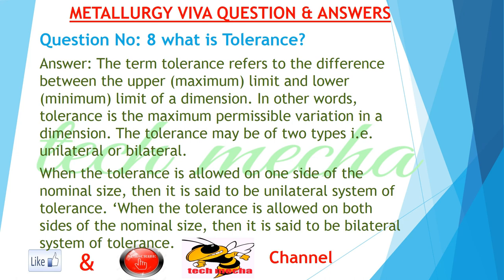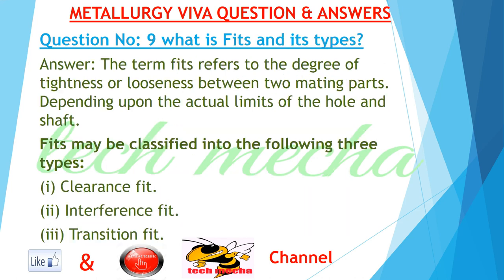When the Tolerance is allowed on one side of the nominal size, then it is said to be a unilateral system of tolerance. When the Tolerance is allowed on both sides of the nominal size, then it is said to be a bilateral system of tolerance.